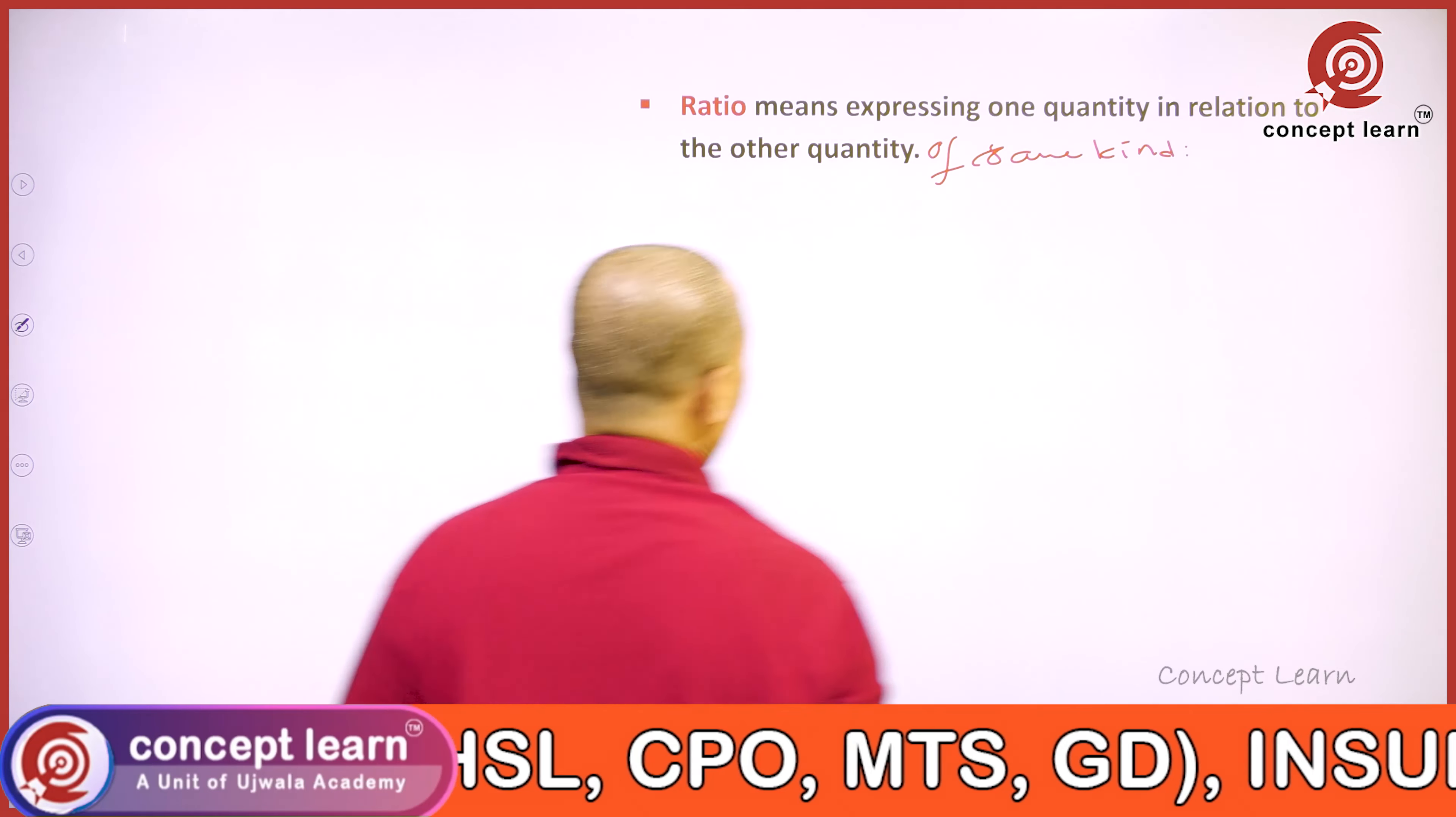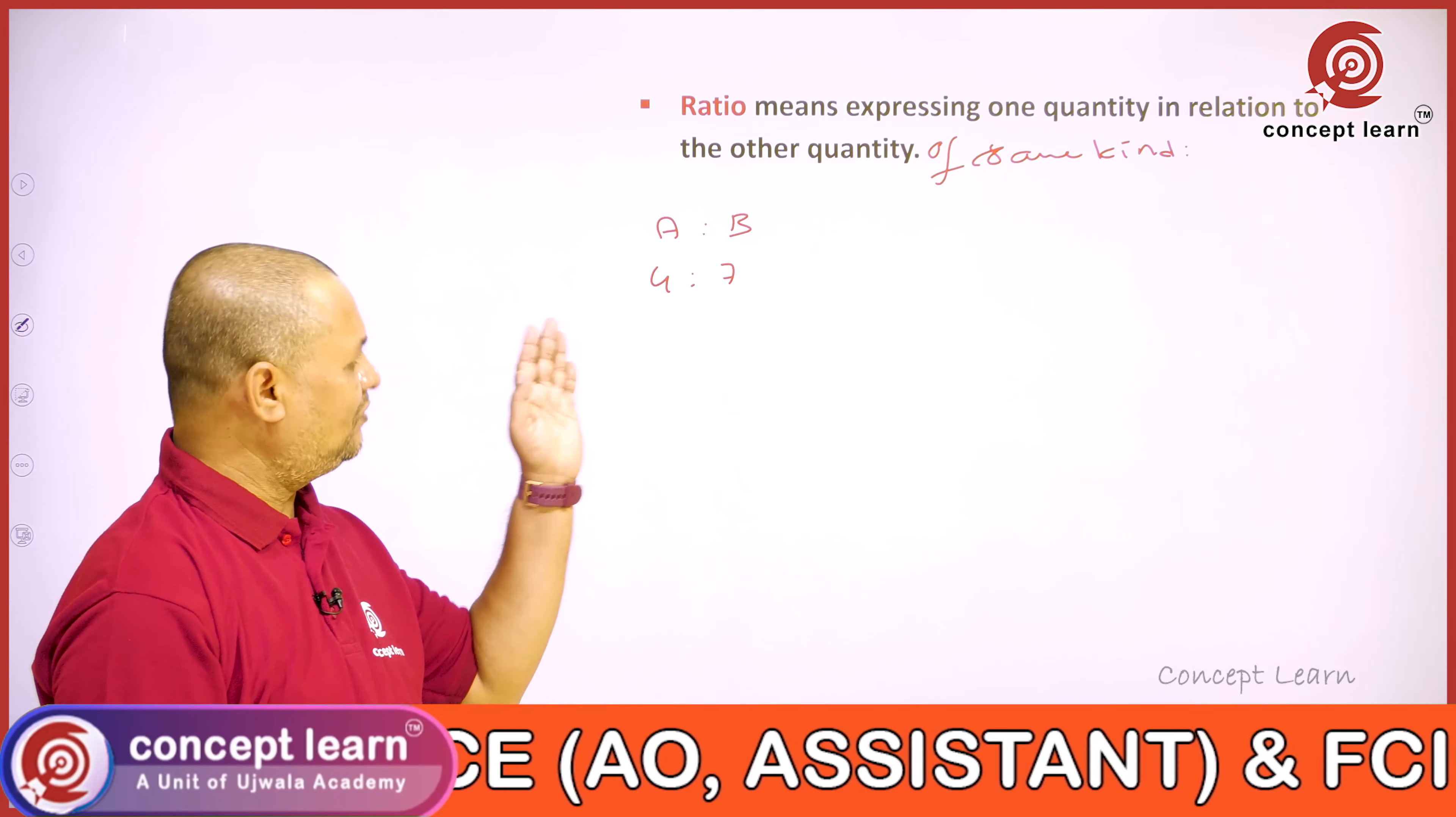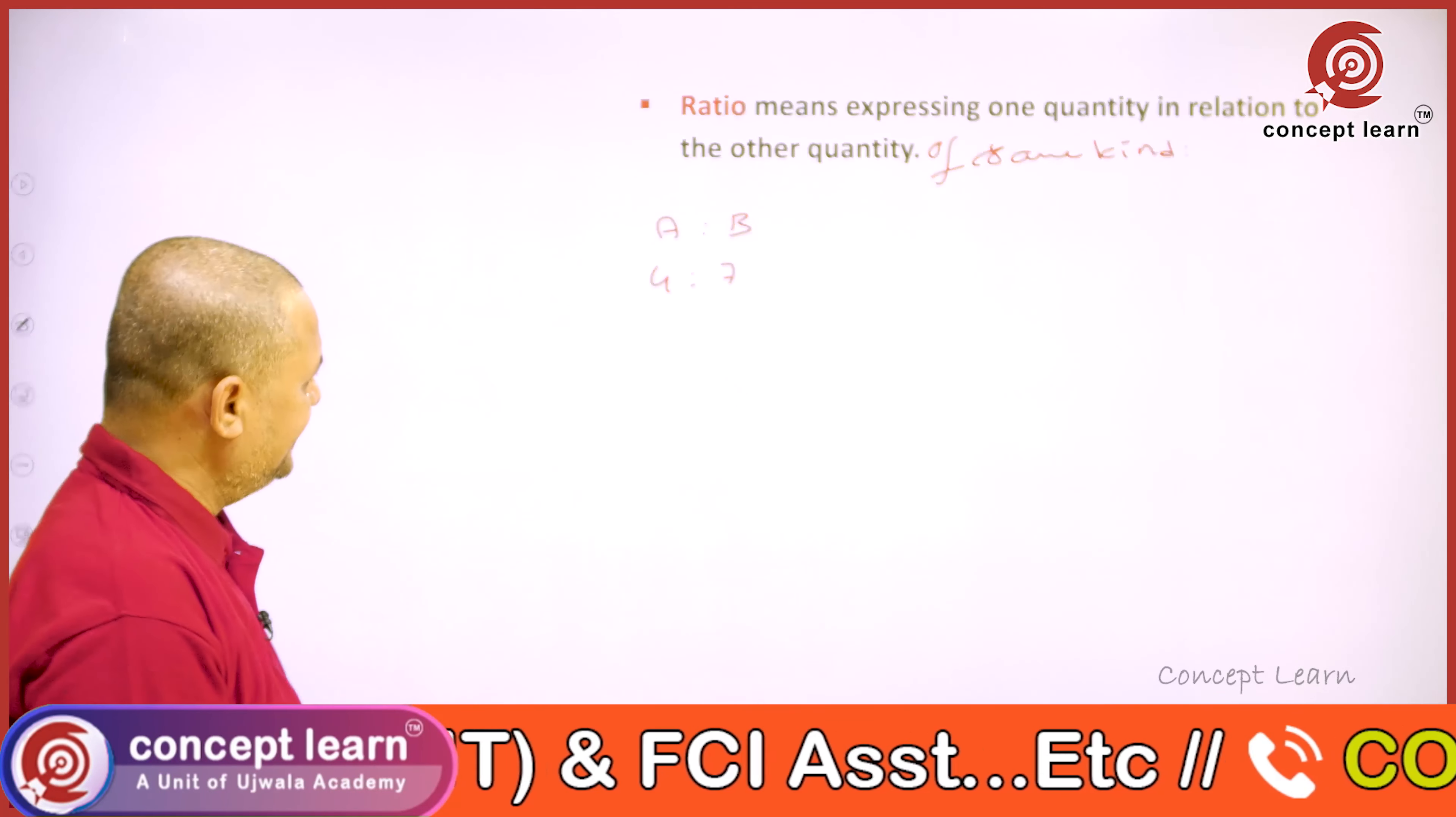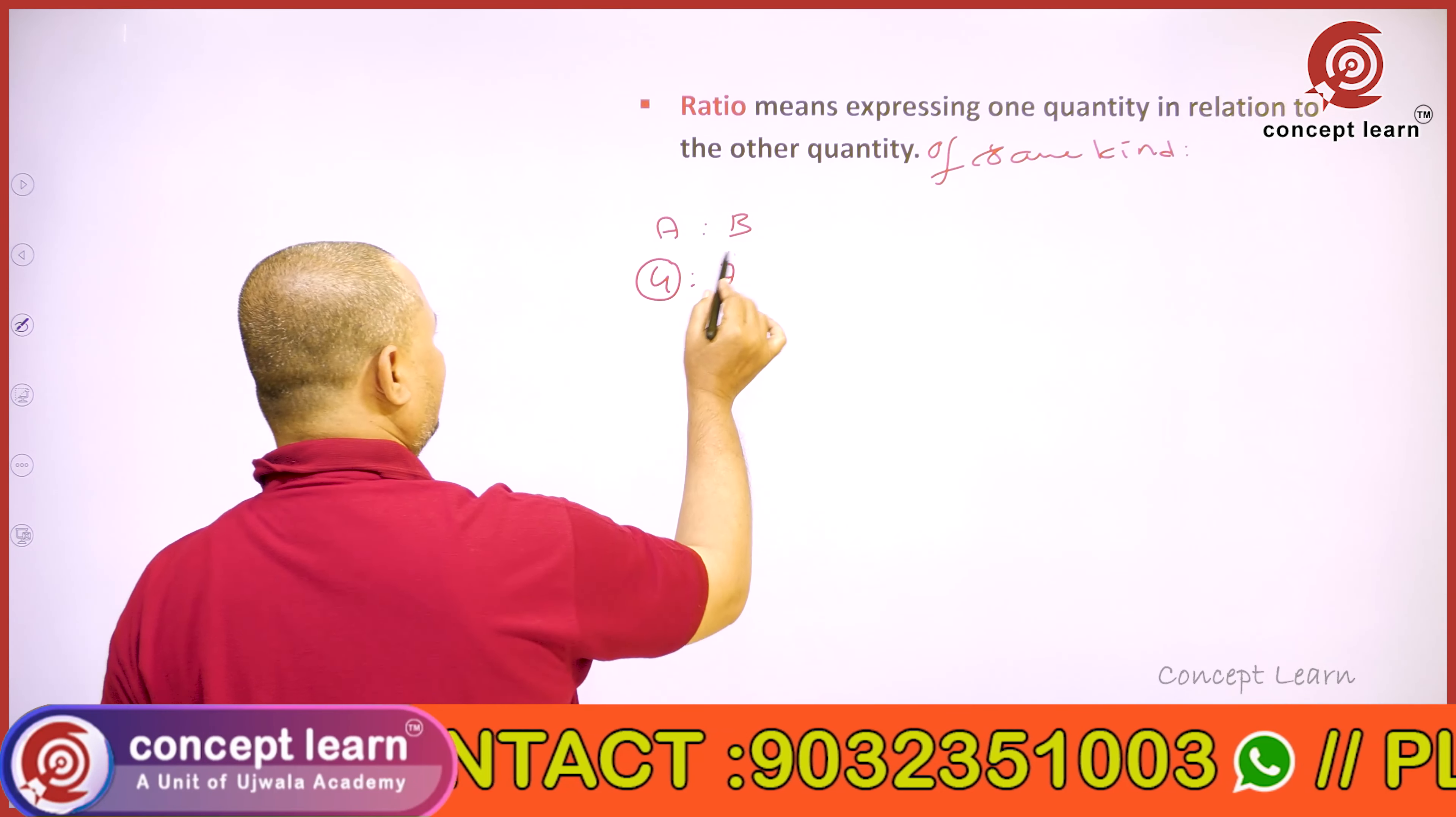So, for example, when I say A is to B equals 4 is to 7, what does it mean? Expressing one quantity in relation to the other quantity—it means whenever A gets 4 parts, B is 7 parts.